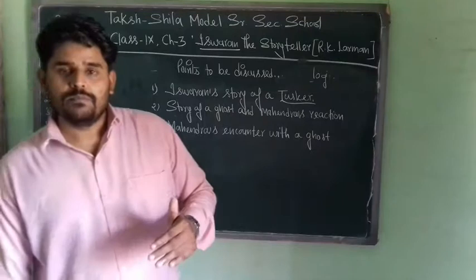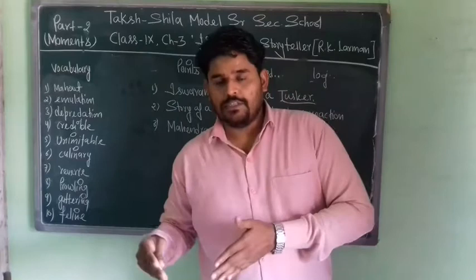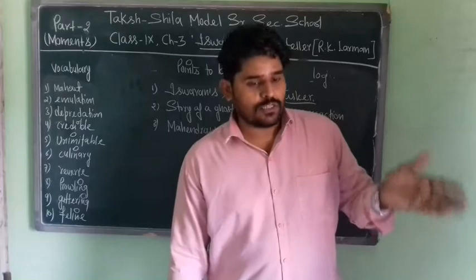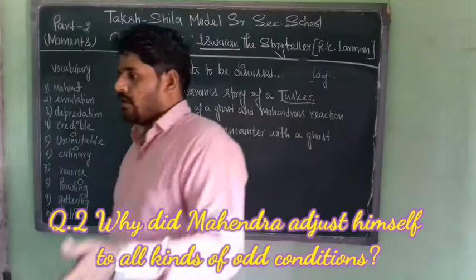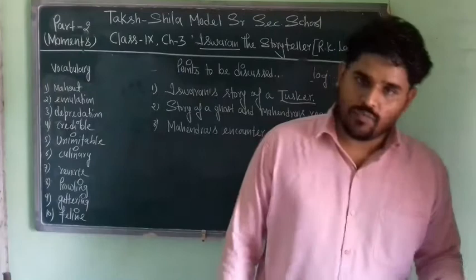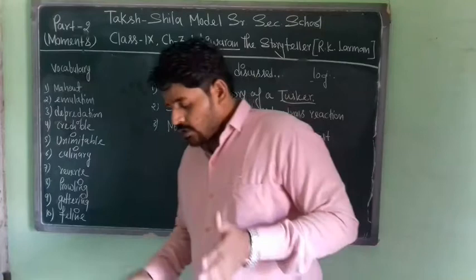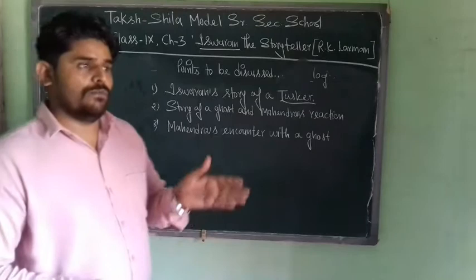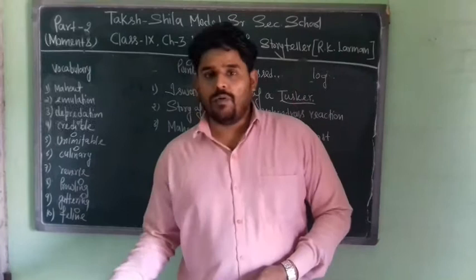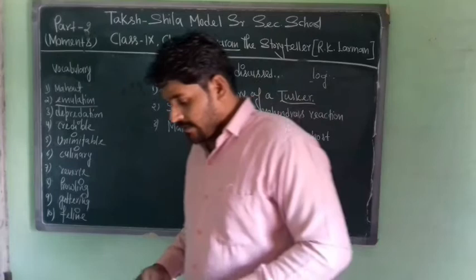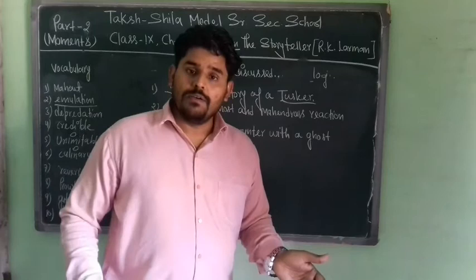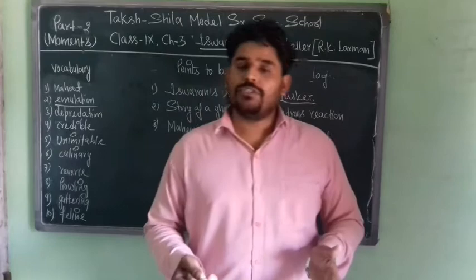The Tusker came to Iswaran's town. It came onto the road and started smashing all the stalls which offered vegetables and fruits. It started damaging everything whatever came its way. When Iswaran was narrating this incident, he just stood up from his place and started stamping his feet in the emulation of the mad elephant. Emulation here means imitation — in the same way the elephant acted, Iswaran imitated those actions in front of his master Mahindra.